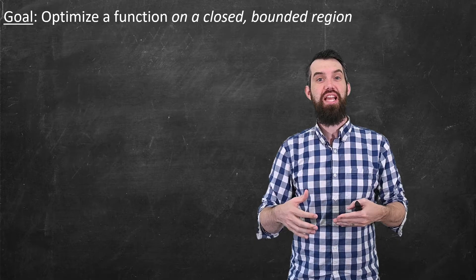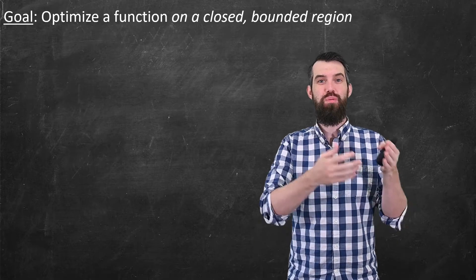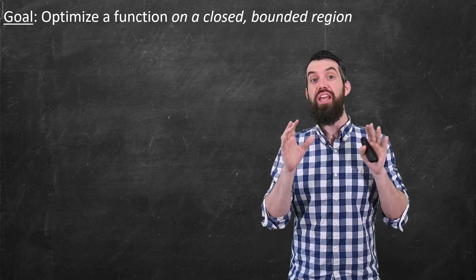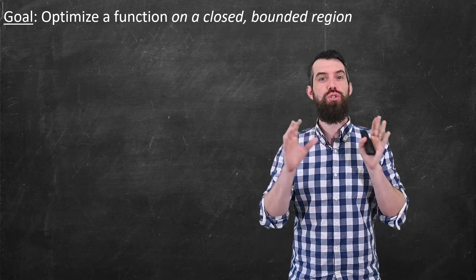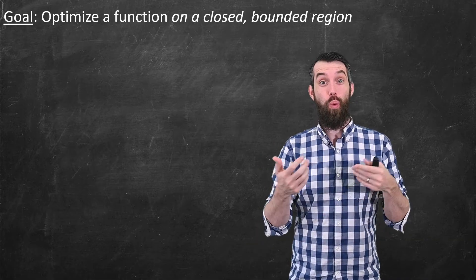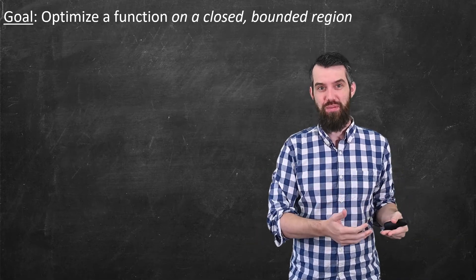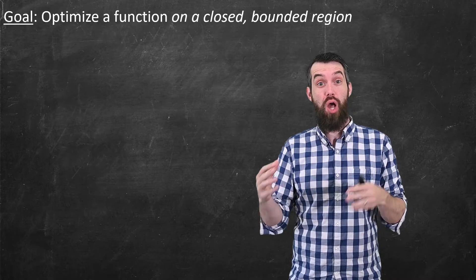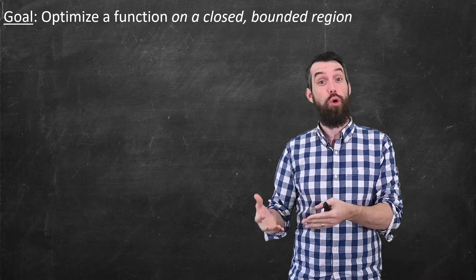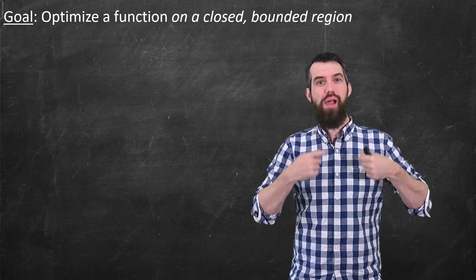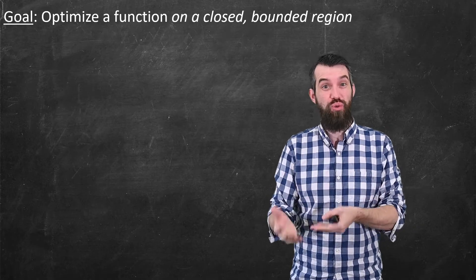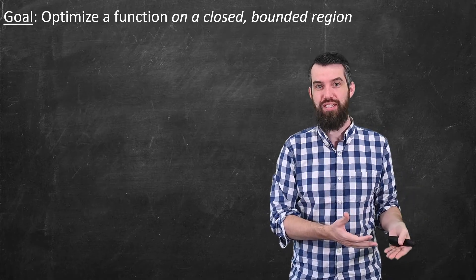In this video, we're going to study how to find maximums and minimums of a multivariable function on a closed region. I have to unpack what that even means, because in the previous video we talked about finding local maximums and local minimums of a function, but what do I mean by 'on a closed region'? How does that affect the process?